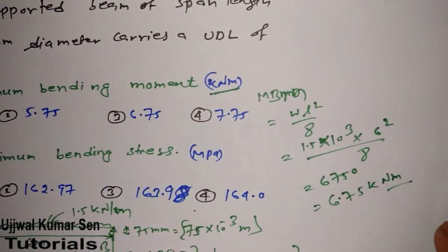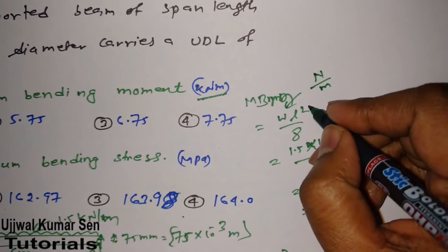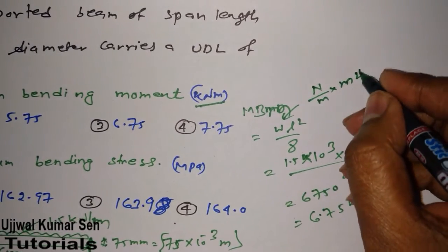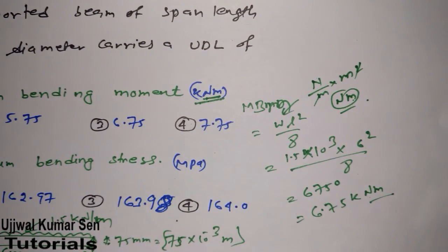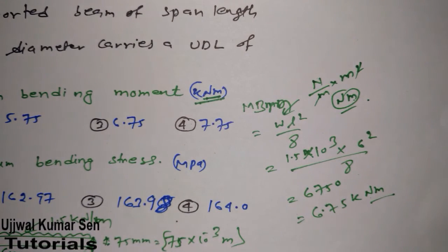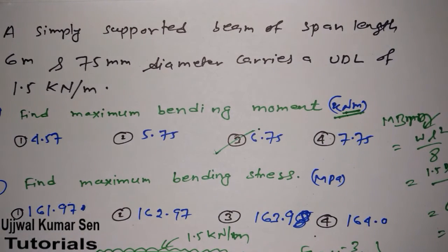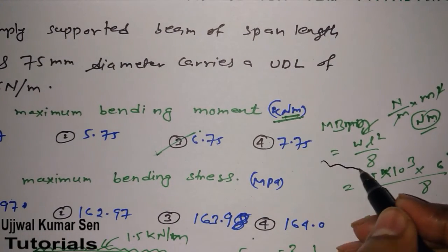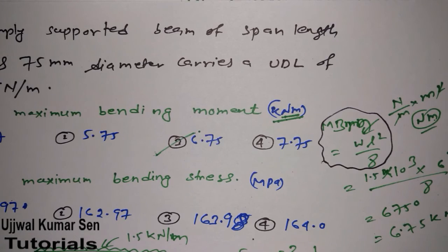Checking the units: w is in newton per meter, multiplied by meter squared, divided by 8 — the meters cancel, giving kilonewton-meter. The unit is correct. Looking at the answer options, option 3 is the right answer for this question. So we now know how to find maximum bending moment for a simply supported beam with UDL.